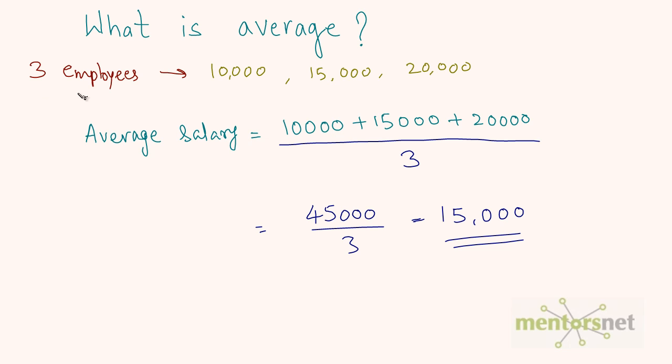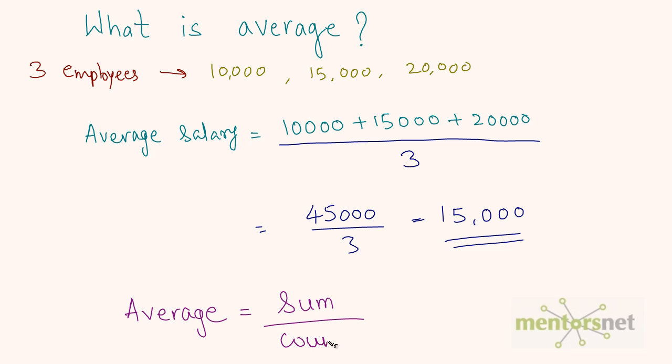So the average salary of these three employees is 15,000 rupees. The basic definition of average is: average equals the sum of all the numbers divided by the count. Whenever you have a list of numbers and need to find the average, take the sum of all numbers and divide by the total count.